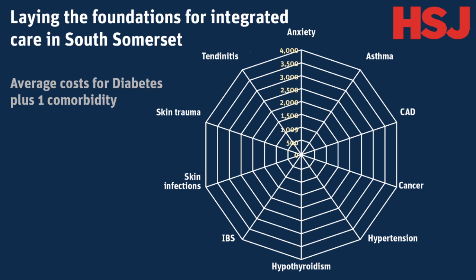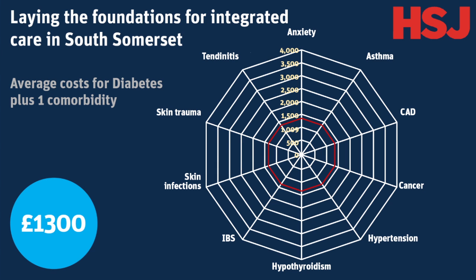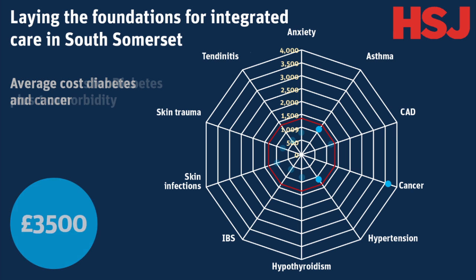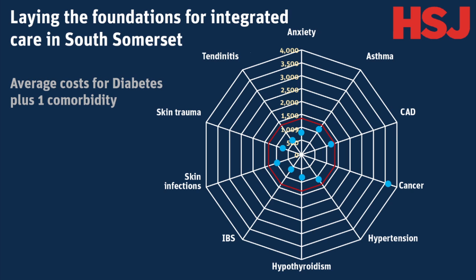83 people have diabetes and asthma. As we've seen, the average cost for people with diabetes and one other chronic condition amounts to £1,300. We can depict this average as a red circle on the spider diagram. Costs are lower than this average for people with diabetes and hypertension, at £1,000, and slightly lower for people with diabetes and asthma, at £1,200. But costs are higher for the 51 people with diabetes and cancer, amounting to £3,500 annually. By plotting costs for all combinations, we can see how costs of particular combinations vary from the average, with some variation particularly because of the costs associated with treating cancer, but the blue and the red lines correspond quite closely to one another.